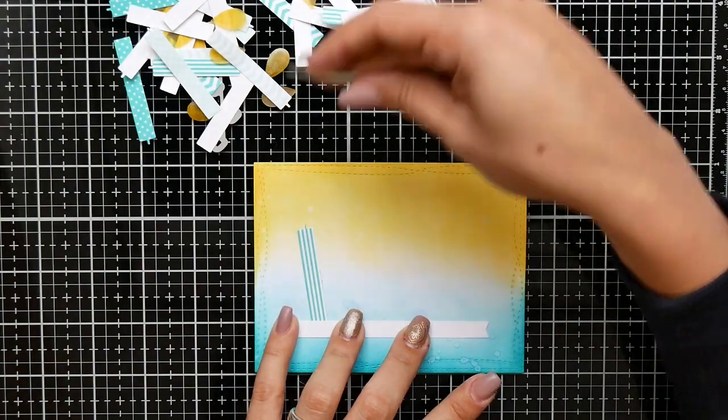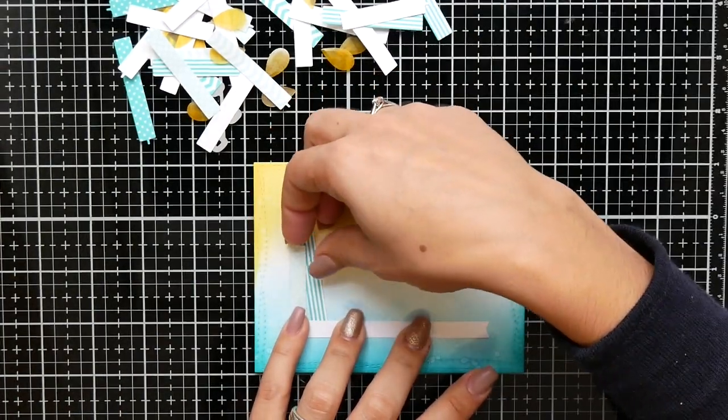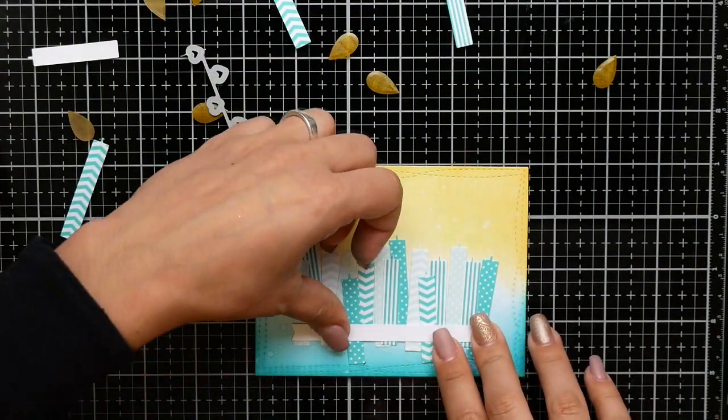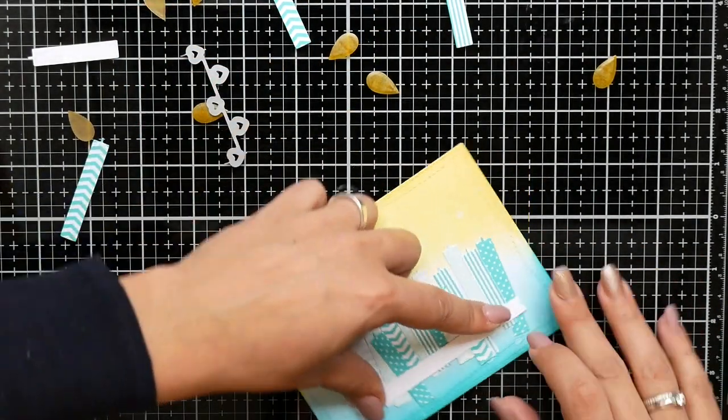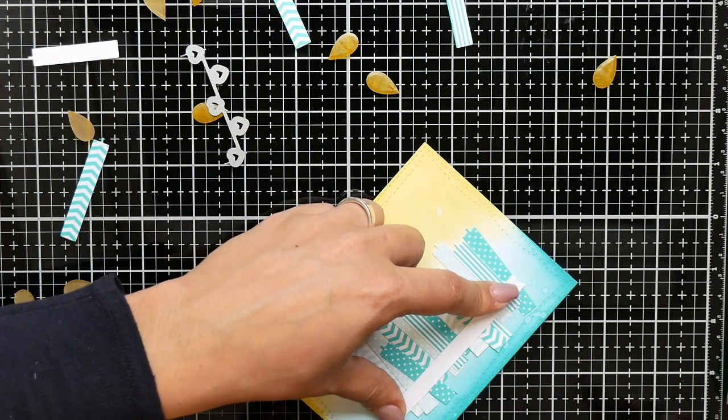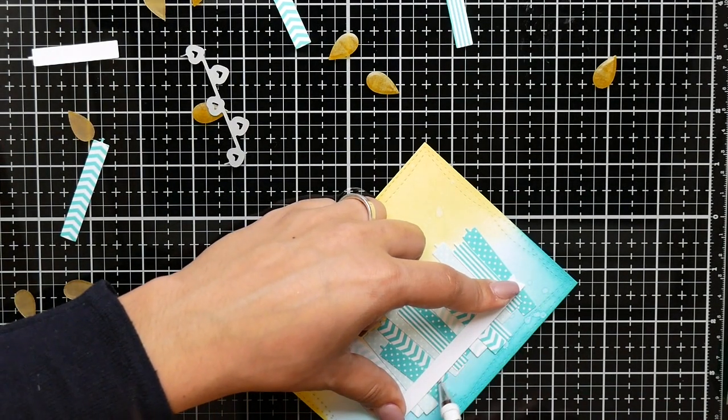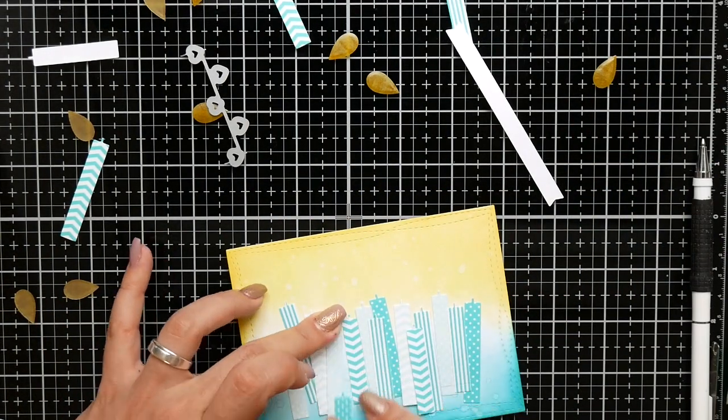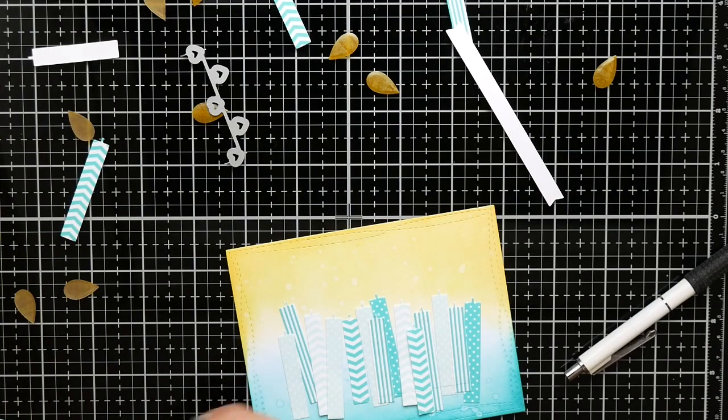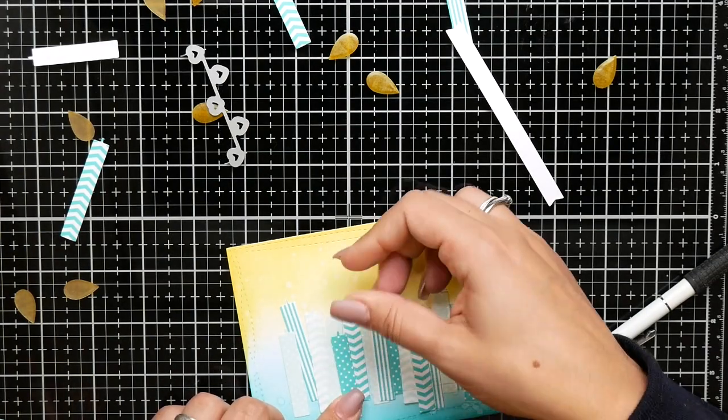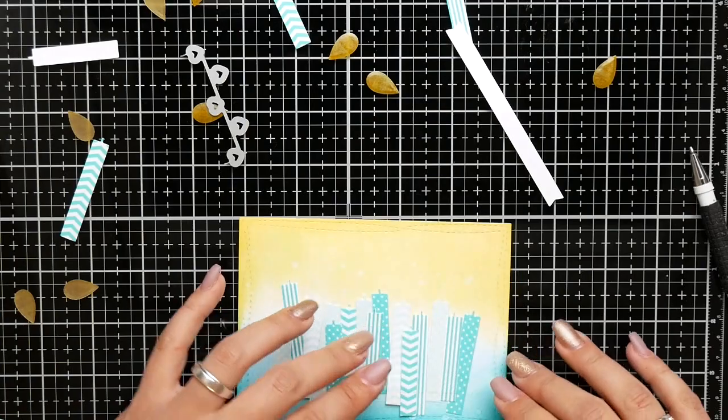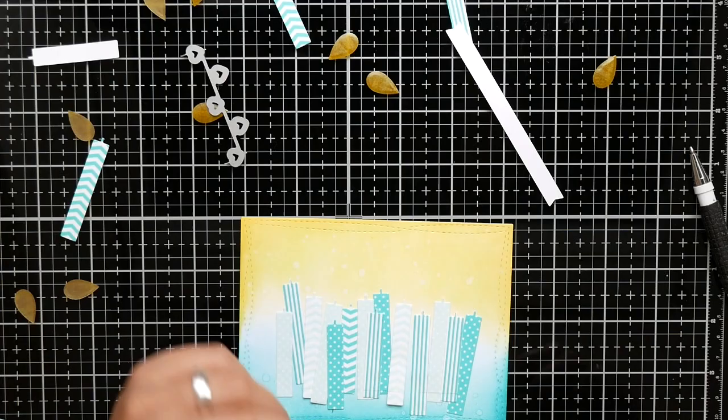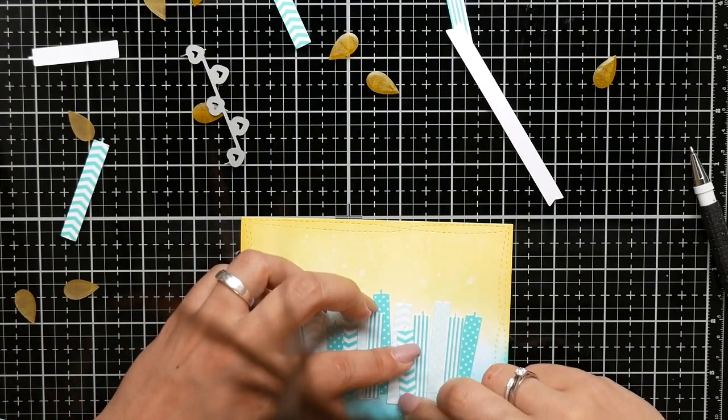Each candle has Tombow Mono Multi glue behind it because when the liquid is dried they are removable again. I wanted the candles to have different heights so I'm cutting them down now to the right size. I made a mark before using a pencil.